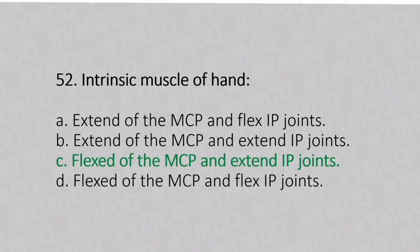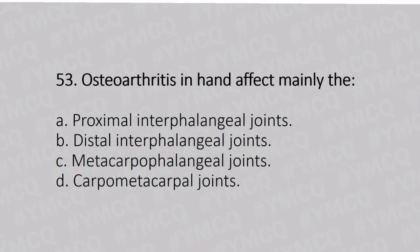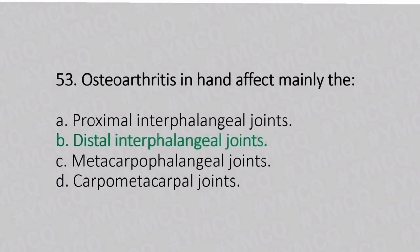Now let's move to question number 53. Osteoarthritis in the hand affects mostly the. Option A: proximal interphalangeal joint. Option B: distal interphalangeal joint. Option C: metacarpophalangeal joint. Option D: carpometacarpal joints. And the answer is Option B, distal interphalangeal joints.